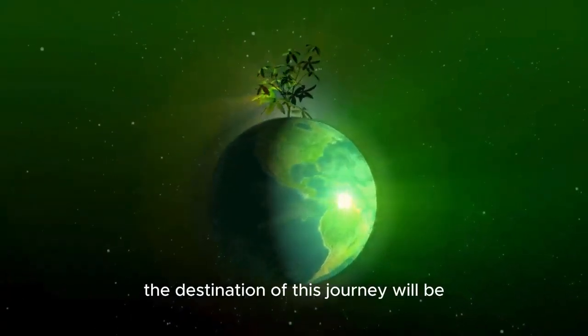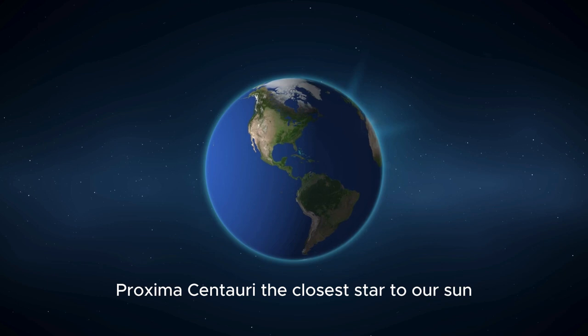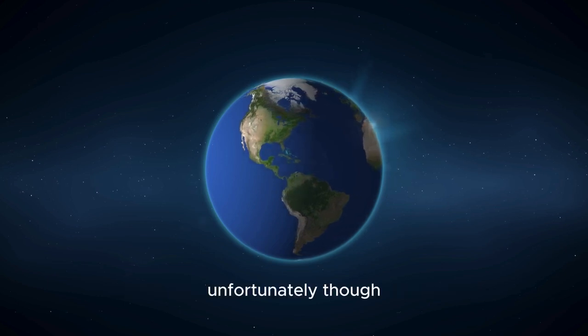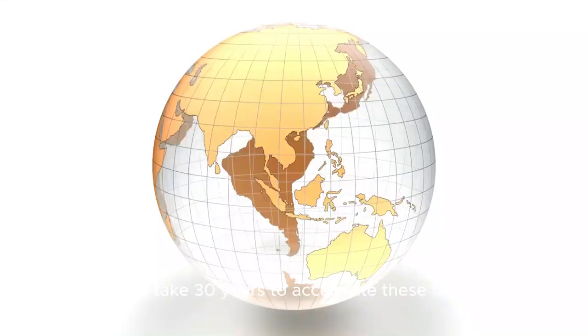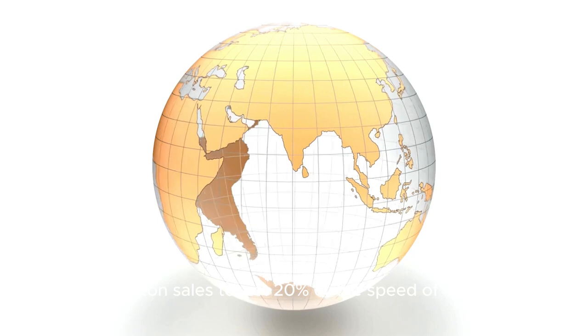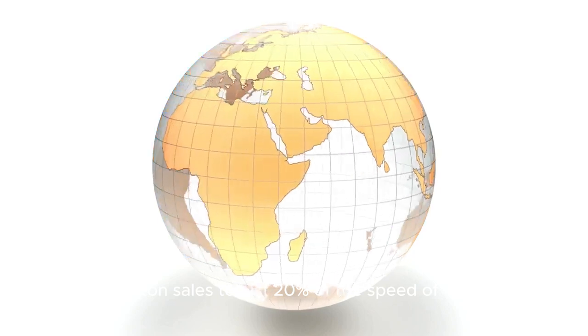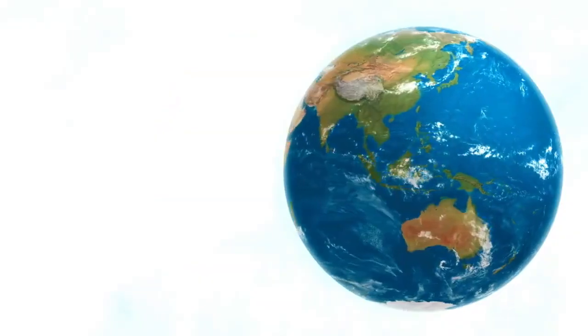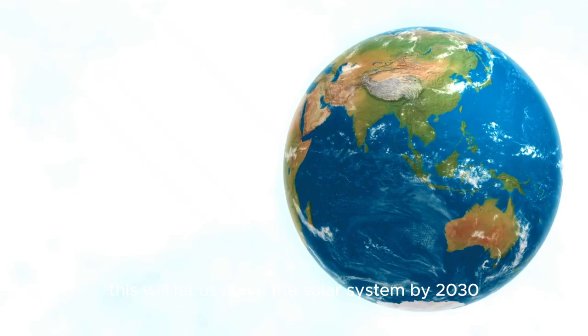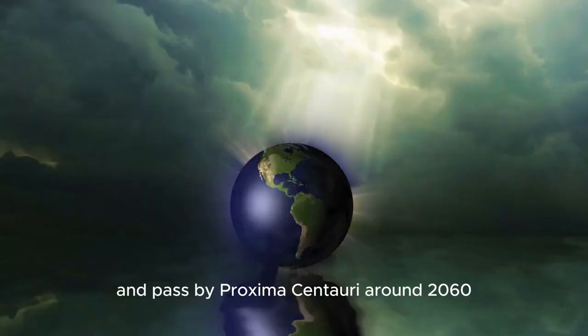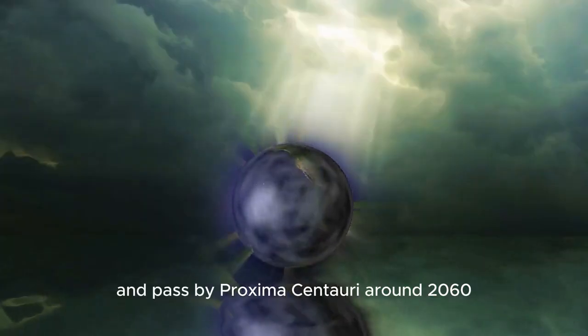The destination of this journey will be Proxima Centauri, the closest star to our sun. Unfortunately, though, it'll take 30 years to accelerate these tiny photon sails to just 20% of the speed of light. Nevertheless, this will let us leave the solar system by 2030 and pass by Proxima Centauri around 2060.